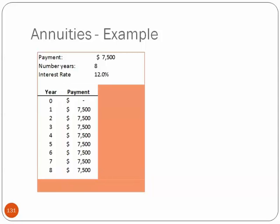Next, we have our payments. This is an annuity, so every payment is, by definition, identical. We receive $7,500 in each year one through eight.